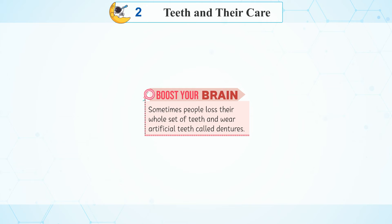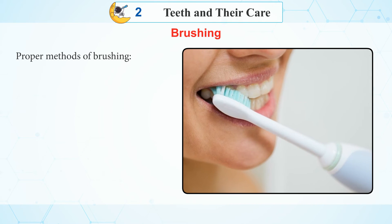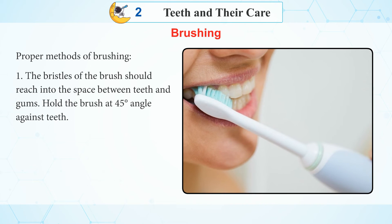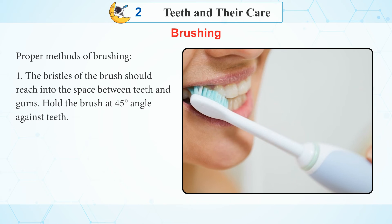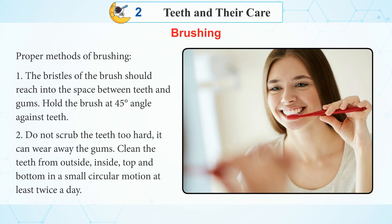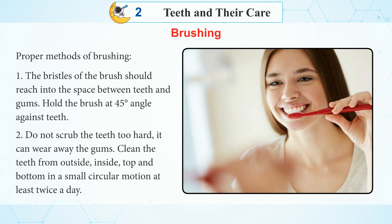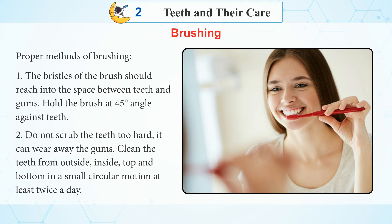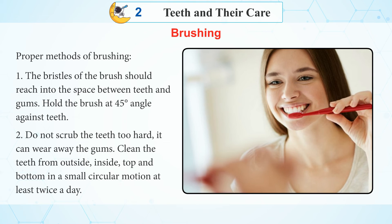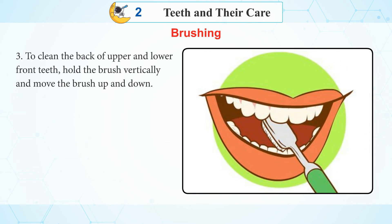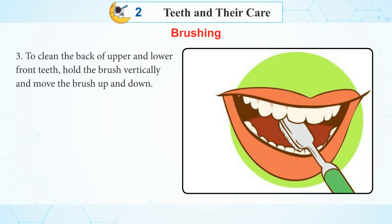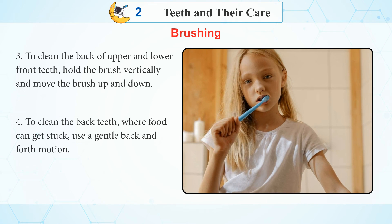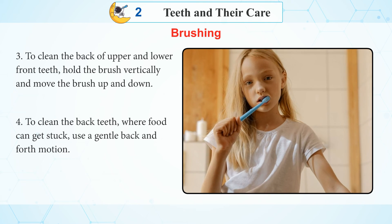Sometimes people lose their whole set of teeth and wear artificial teeth called dentures. Brushing — proper methods of brushing: Number one, the bristles of the brush should reach into the space between teeth and gums; hold the brush at a 45-degree angle against teeth. Number two, do not scrub the teeth too hard as it can wear away the gums; clean the teeth from outside, inside, top and bottom in a small circular motion at least twice a day. Number three, to clean the back of upper and lower front teeth, hold the brush vertically and move it up and down. Number four, to clean the back teeth where food can get stuck, use a gentle back and forth motion.